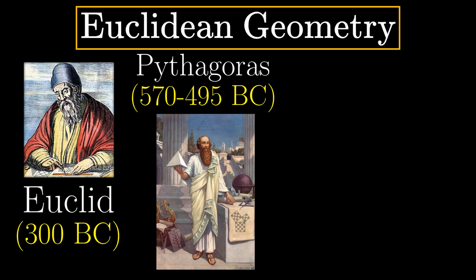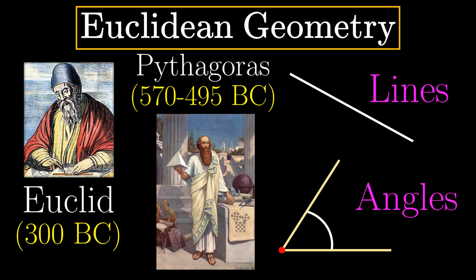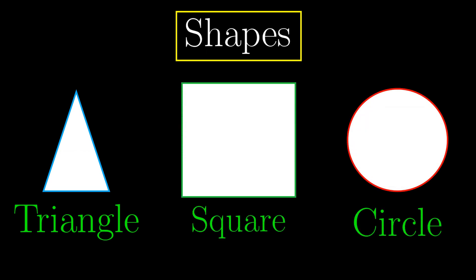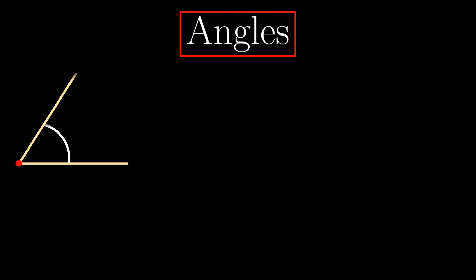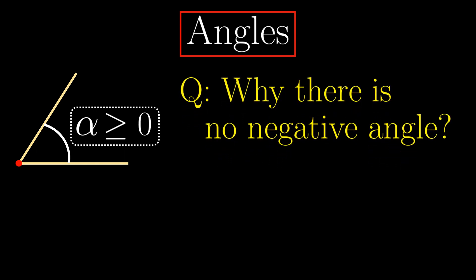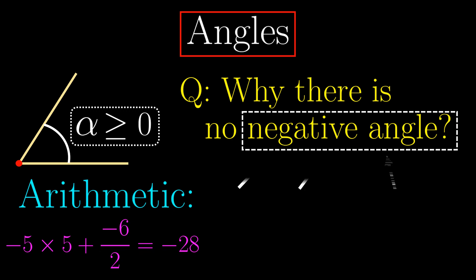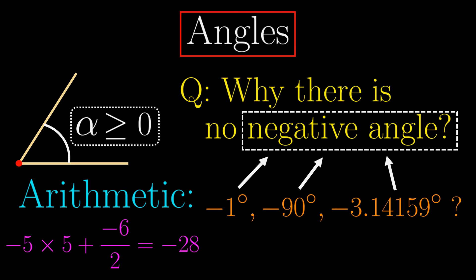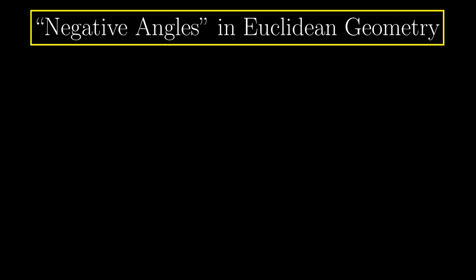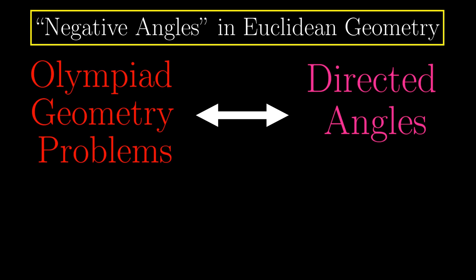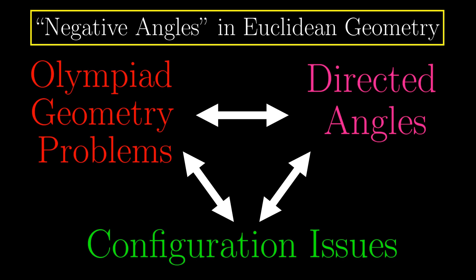Geometry started off in ancient Greece mainly as a subject concerning lines and angles, giving us different shapes like a triangle, square, or even a circle. In this video we will focus on the topic of angles. Intuitively we normally define angles to be non-negative, but have you ever thought of why there are no negative angles? Since negative numbers do play a significant role in arithmetic, there should be negative angles, right? Well, as counterintuitive as it may seem at first, we do use negative angles in Euclidean geometry. If you have solved olympiad geometry problems before, the concept of negative angles — also known as directed angles — is a really useful tool in dealing with configuration issues.